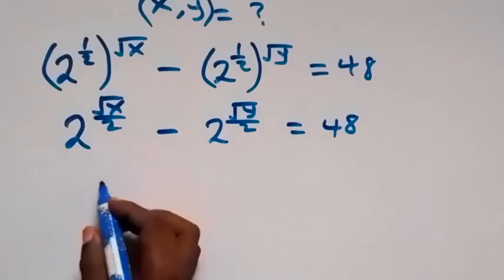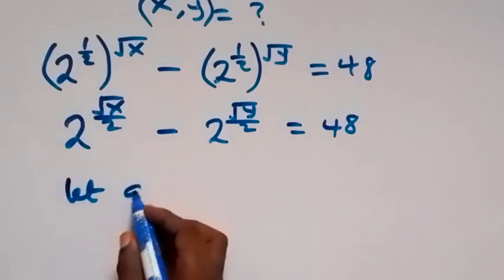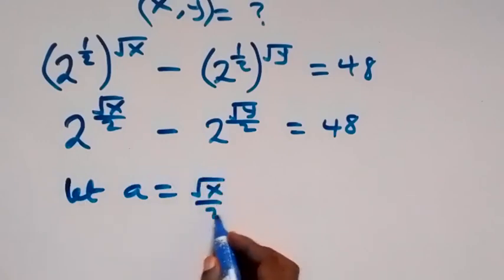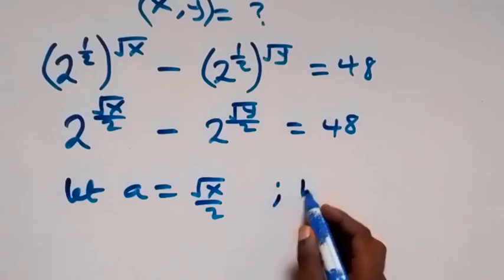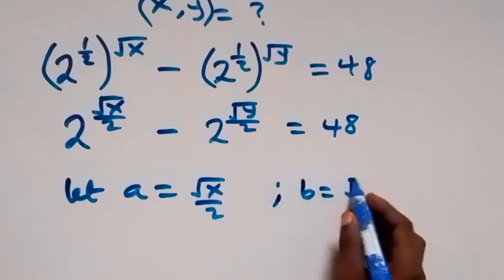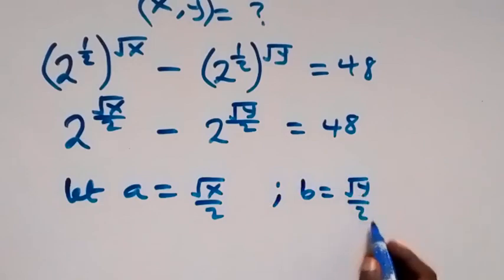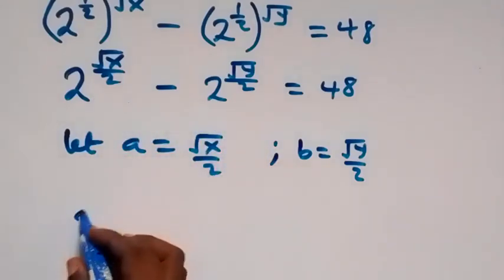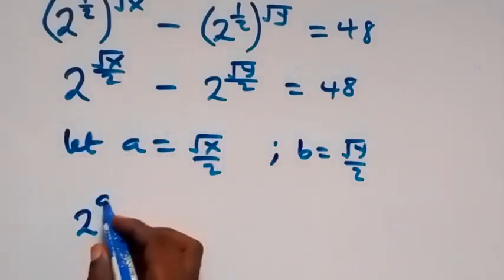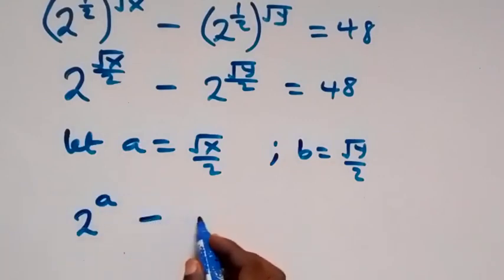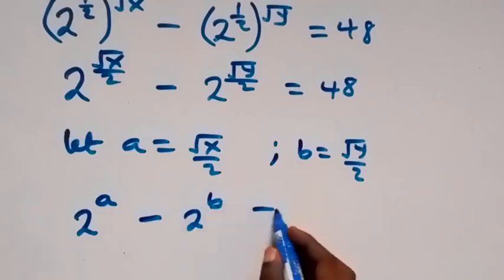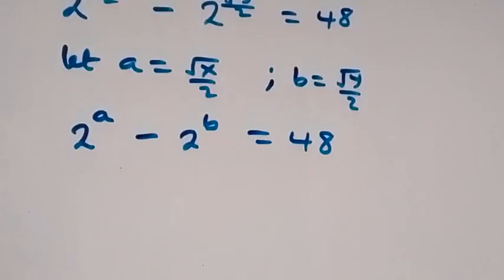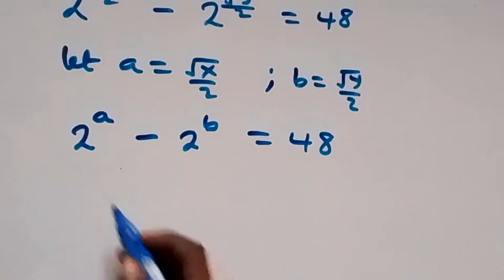We can replace these with letters. Let a equal root x over 2, and let b equal root y over 2. Then we can write this in terms of a and b: 2 raised to power a, minus 2 raised to power b, equals 48.